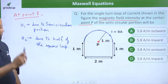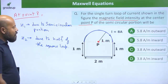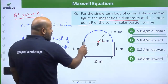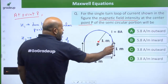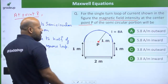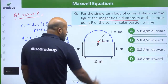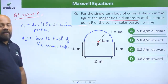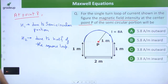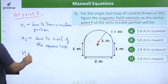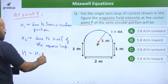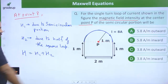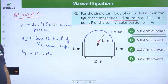If you closely observe the given configuration, this is going to be a half of the square loop, where the length of each side of the full square is going to be two meters. So the total magnetic field is going to be H1 plus H2. The idea is to find H1 and H2 separately and then add them up as per their direction.